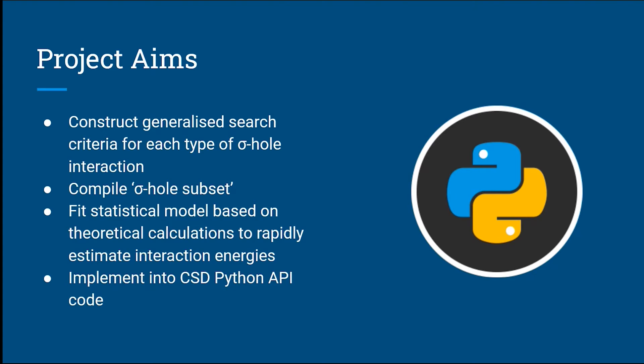The model will be implemented into a CSD Python API program, so it will recognize new structures deposited into the CSD that contain a sigma-hole and output an estimate of the interaction energy of that moiety.